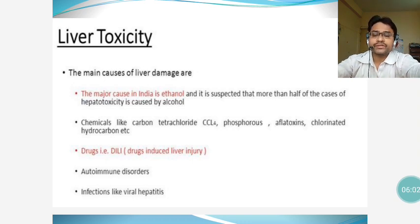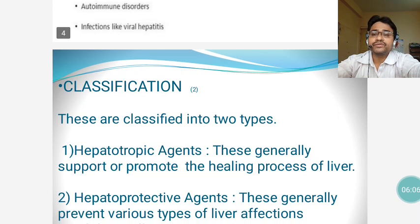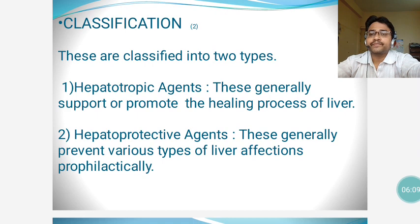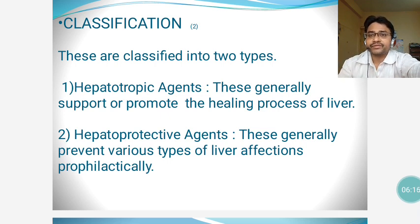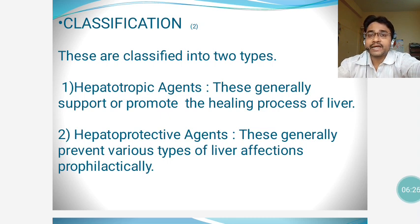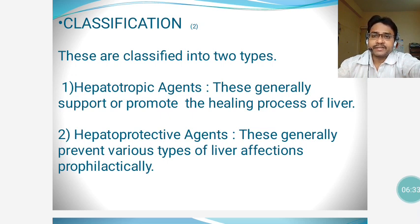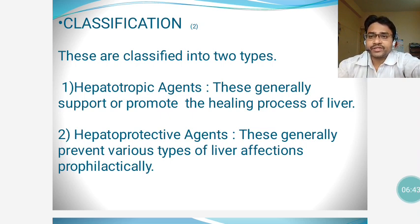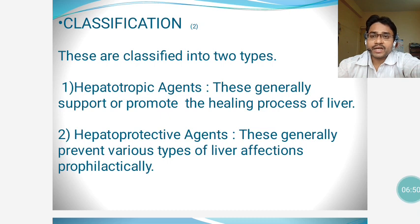Now let us discuss the classification of liver supportive drugs, or hepatoprotective drugs, which are classified into two types. The first is hepatotropic agents, which support or promote the healing process of the liver once hepatocytes have been damaged. The second includes drugs that prophylactically prevent various types of liver infections, protecting liver cells from toxins like carbon tetrachloride, phosphorus, and aflatoxins.